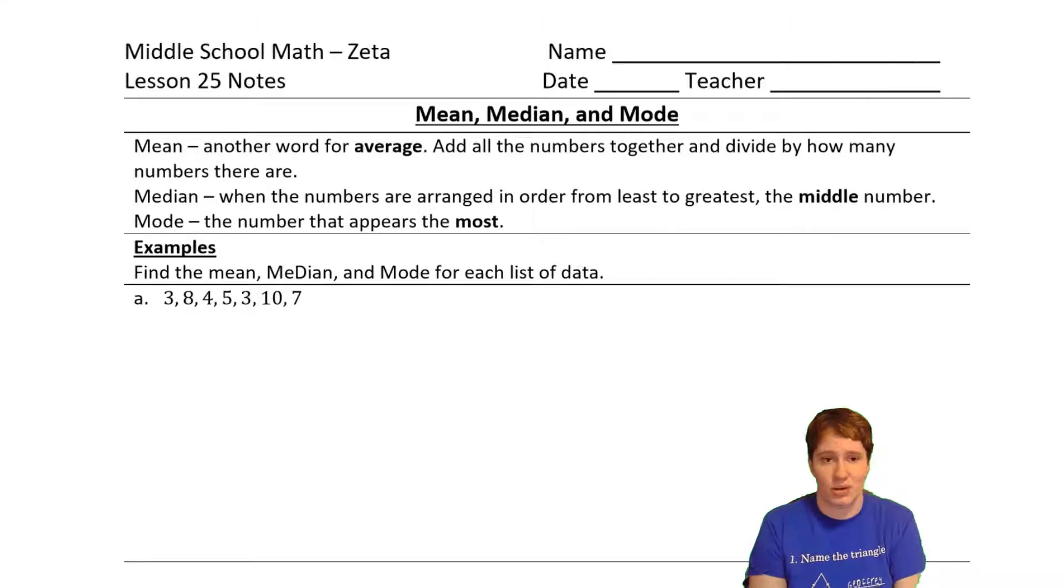Another place you've probably heard the word average is like batting average. So a batting average, I think, is where you talk about on average, how well is a baseball player likely to hit the ball. There are a couple other things, though, that we can find that also might help us know more about the set of data. So median is if you've got the numbers arranged in order from least to greatest, the median is the middle number. And then mode is the number that appears the most.